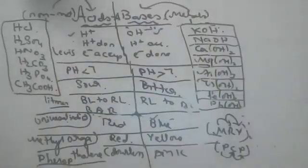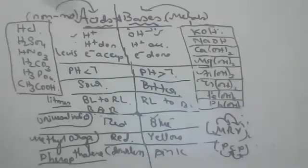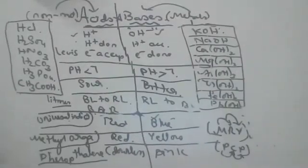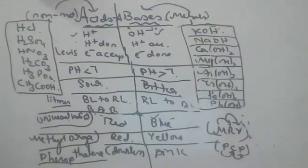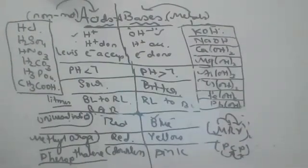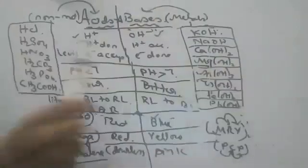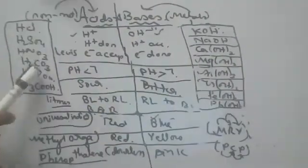If asked in exam what are the differences between acids and bases, you should write everything in this whole box — this carries 5 to 10 marks. You must write including examples and names of acids. Minimum you are expected to know HCl, H2SO4, HNO3, H2SO4, and acetic acid — acetic acid is very important as many reactions will come on it in future classes.